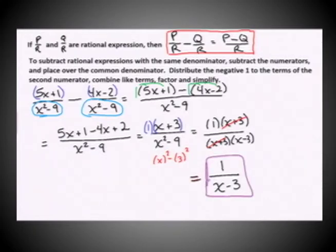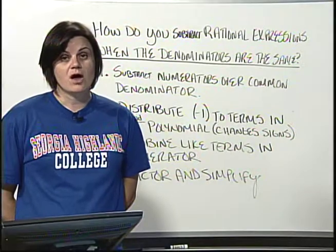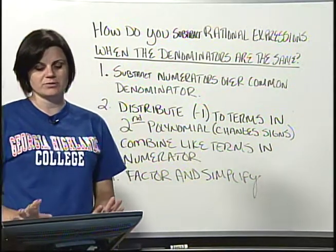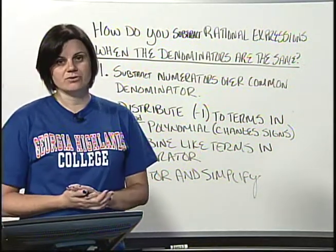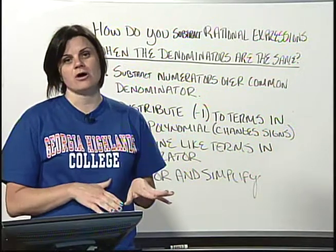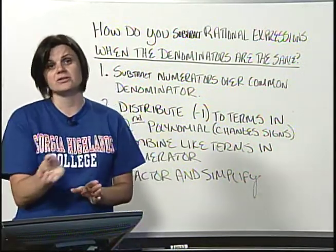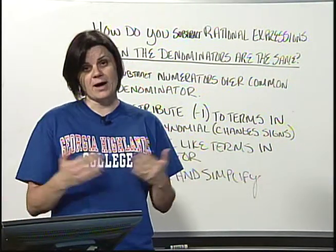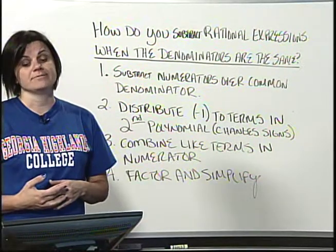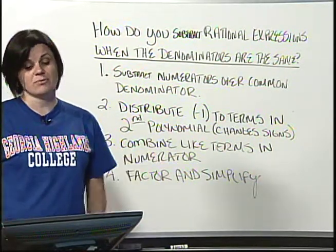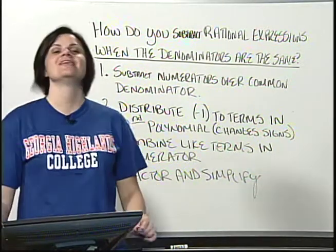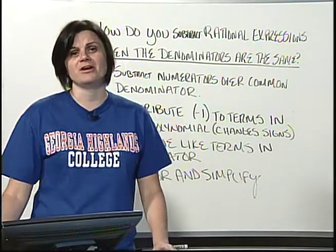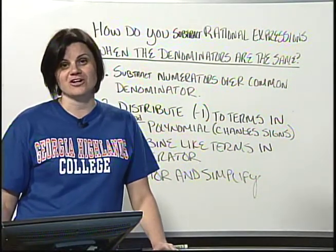This has been an example of how to subtract rational expressions with common denominators. To recap really quickly, you're going to subtract your numerators over your common denominator. But that creates the situation where you're going to need to distribute the negative 1 to that second polynomial being subtracted. Combine your like terms and factor and simplify if you can. You might not have anything to do at the end, which is also nice. If you have any other questions about how to subtract rational expressions with common denominators, please talk to your Highlands instructor. Thank you.